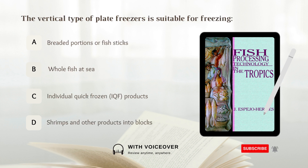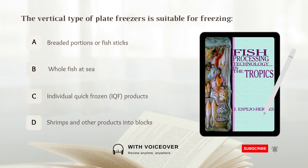The vertical type of plate freezers is suitable for freezing: A. Breaded portions or fish sticks. B. Whole fish at sea. C. Individual quick frozen products. D. Shrimps and other products into blocks. Answer: B. Whole fish at sea.